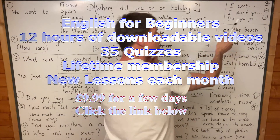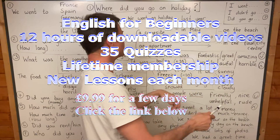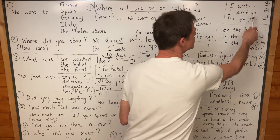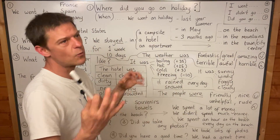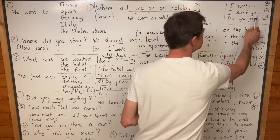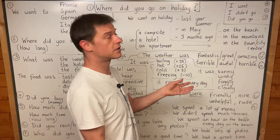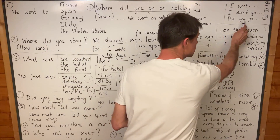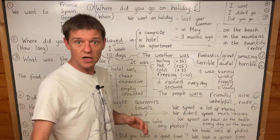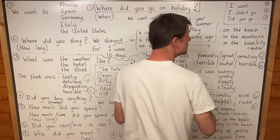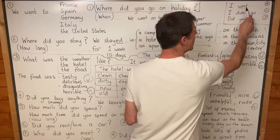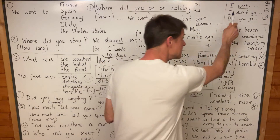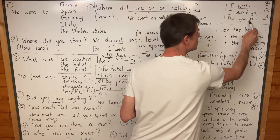Past simple with 'go'. If we talk about yesterday: Yesterday I went to the shop. I didn't go to work — maybe it was Sunday. Did you go to work yesterday? Remember: I went, but didn't go — not 'didn't went', didn't go. And for a question: did you go?